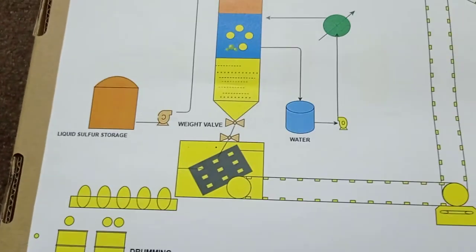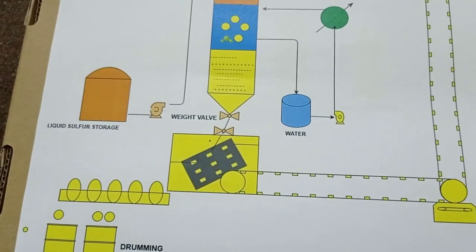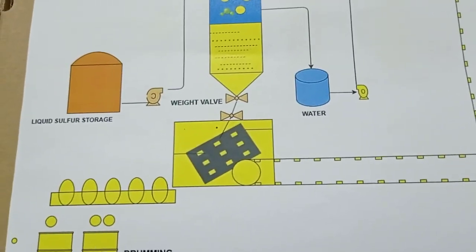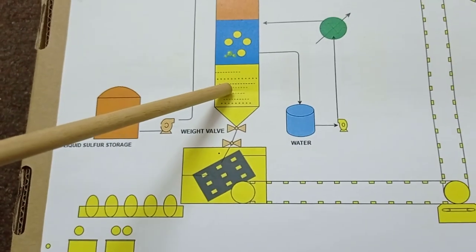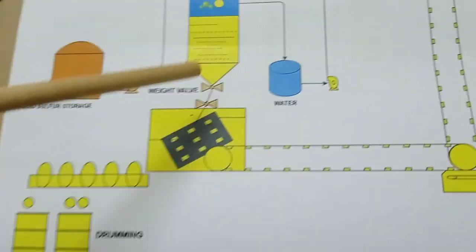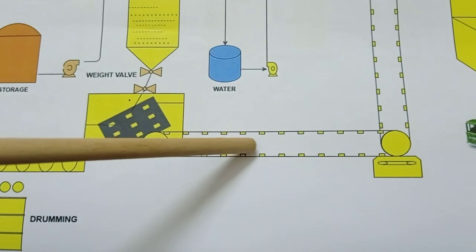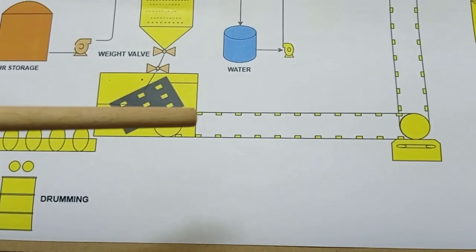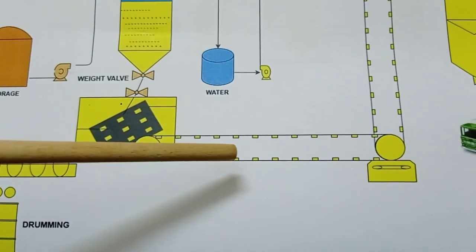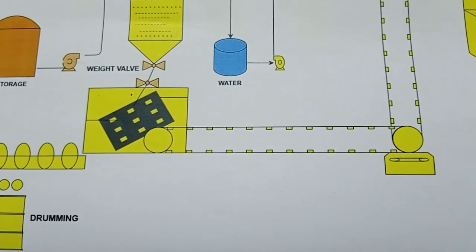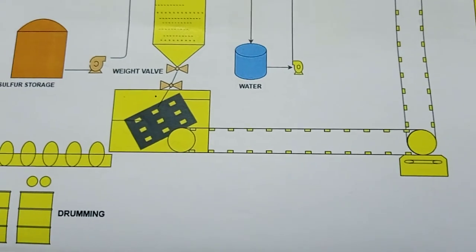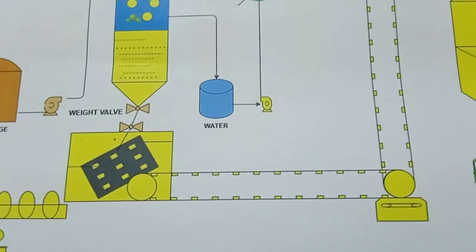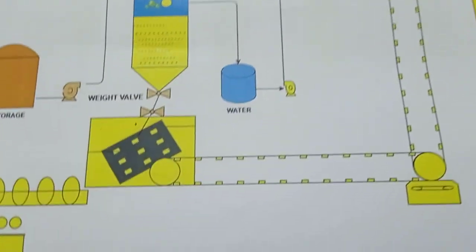Now I'll explain another sulfur granulation method used at some companies. Instead of a granulator vessel, a simple conveyor belt runs through a water bath. Liquid sulfur is sprayed directly onto the conveyor belt in the water bath. The elevation of the conveyor rises so water drains away. The sulfur then goes to a drying unit where air drying removes remaining moisture, and the same conveyor belt type transfers sulfur into the hopper. This is the second method.